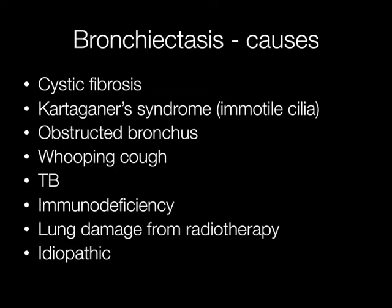There are two main ways in which bronchiectasis can develop. The first is where there is impaired drainage of secretions from the bronchi, resulting in a buildup of secretions. This may occur if there is an impacted foreign body, a tumour, or a congenital condition such as cystic fibrosis — where the mucus is very thick — or Kartagener's syndrome, where the cilia are immotile.